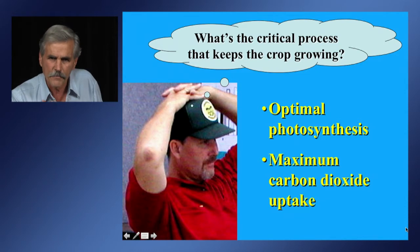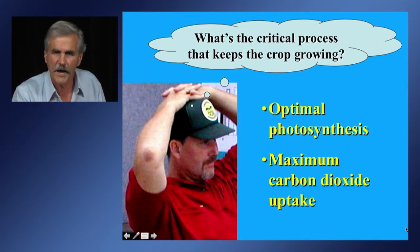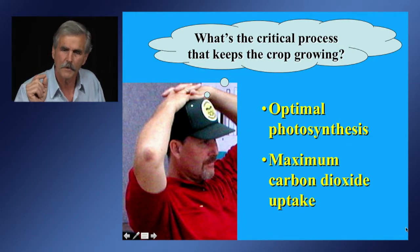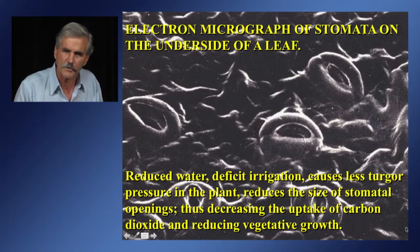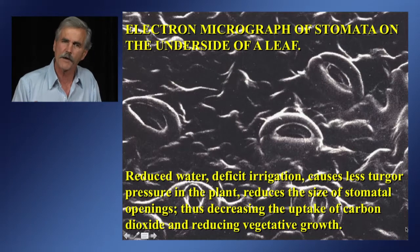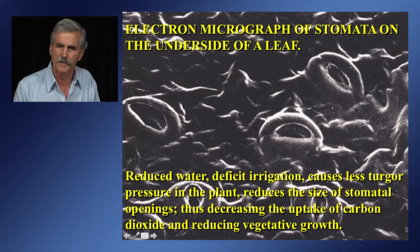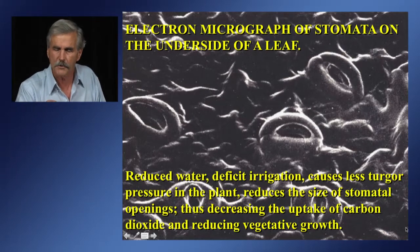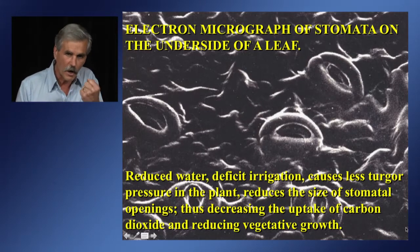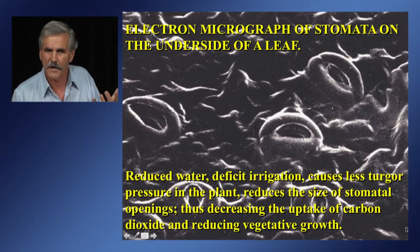To frame the context of this conversation, we have to think about what is a critical process that keeps a crop going — basically optimal photosynthesis and maximum carbon dioxide uptake. This is a micrograph of the underside of a leaf where you can see the fully expanded stomata under good turgor pressure. Good turgor pressure in a plant means pretty good water status.